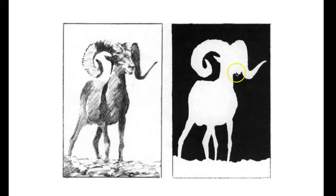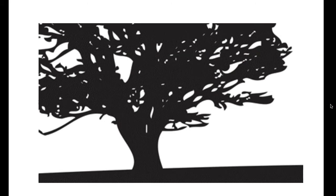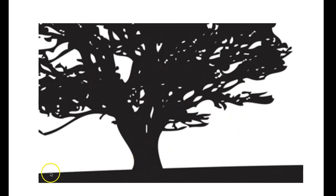They did the same thing here — the goat is still the positive space, but here it's white and here it's black. That shows you it doesn't mean the white space is always negative or always positive — your main idea, the subject, is your positive space. Here your positive space would be the mountain climber, and your negative space would be the mountain and everything around them. And here the positive space is the tree, while the negative space is just the air around it.